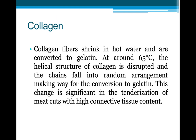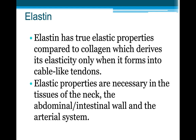Collagen fibers shrink in hot water and are converted to gelatin. Around 65 degrees Celsius, the helical structure of collagen is disrupted and the chains fall into a random arrangement, making way for conversion to gelatin. This change is significant in the tenderization of meat cuts with high connective tissue content. Elastin has elastic properties compared to collagen, displaying its elasticity when it forms into cable-like tendons. These elastic properties are necessary in the tissue of the neck, the abdomen, intestinal walls, and the arterial system.